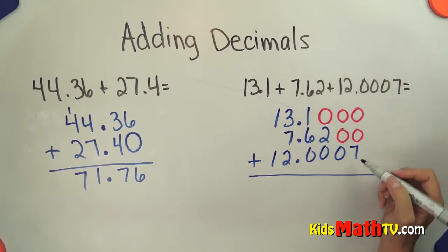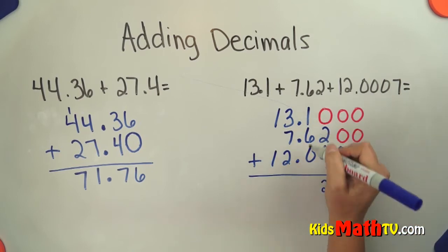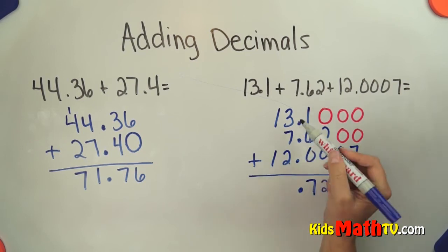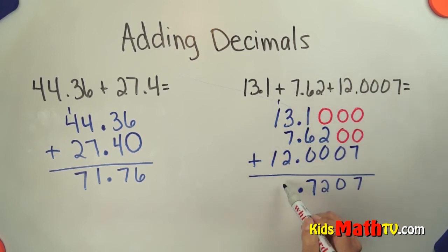And now I simply add. That's 7 and a 0 and 2, 7, bring down my decimal, make sure I have my decimal, 10, 11, 12 and 3.